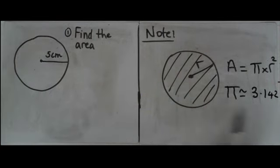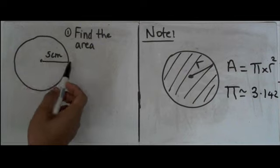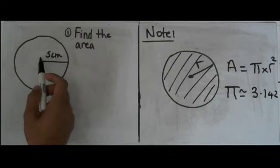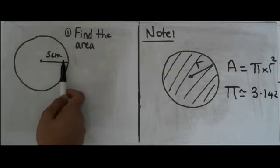So let's use that to work out the area. We know the radius for this circle is 5 cm, so we have a circle with a radius of 5 cm, so r equals 5.